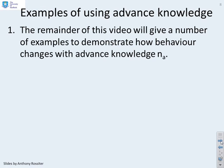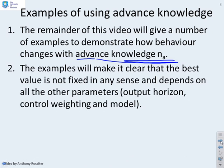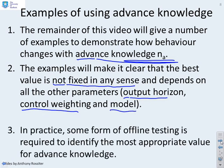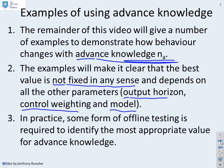The remainder of this video will give a number of examples to demonstrate how behavior changes as you change this advance knowledge parameter na. The examples will make it clear that the best choice for na is not fixed in any sense, and it would be difficult to come up with an analytic solution. It depends in some loose way on the choice of output horizon, the choice of control weighting, the choice of control horizon, the model, and so on. So in practice, you'll need some form of offline testing in order to identify the most appropriate value.